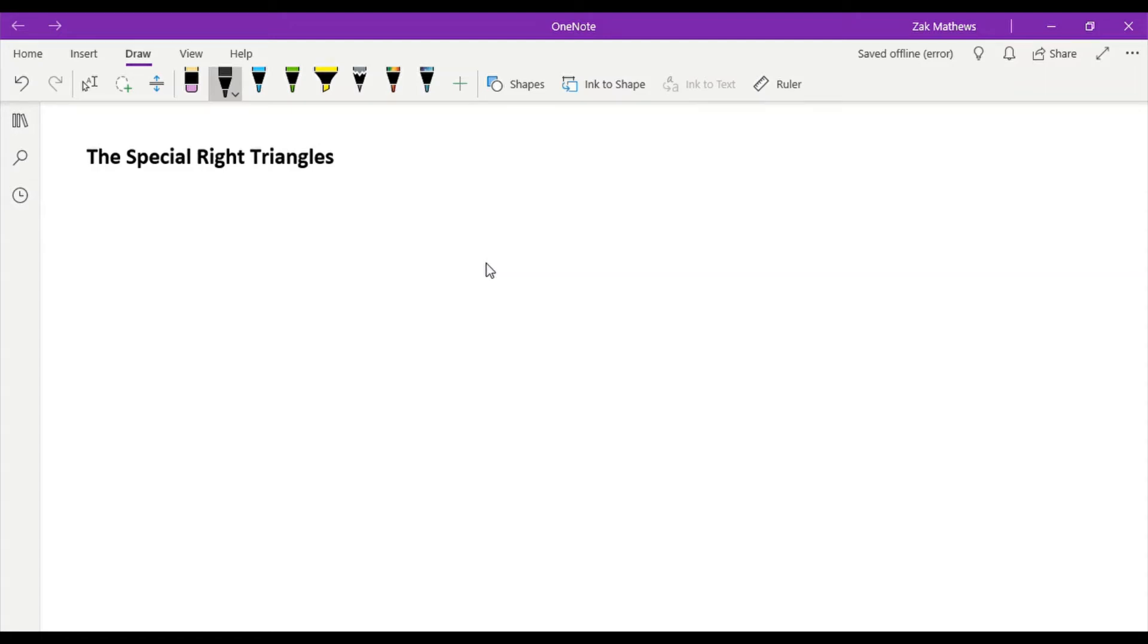Let's take a look at the special right triangles. I will a lot of times call these just the special triangles for short. But these are right triangles that have nice characteristics that allow us to find the ratio of sides and the angles using exact values.